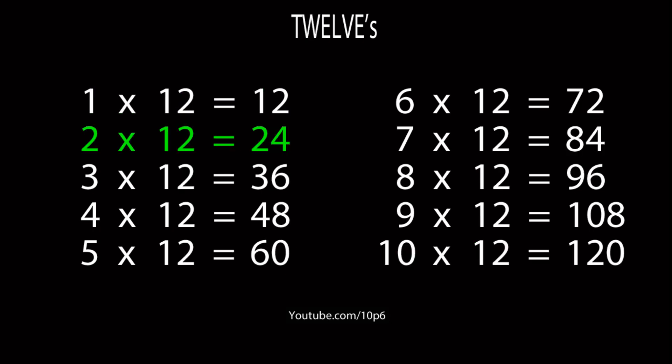1 12 is 12, 2 12s are 24, 3 12s are 36, 4 12s are 48, 5 12s are 60, 6 12s are 72, 7 12s are 84, 8 12s are 96, 9 12s are 108, and 10 12s are 120. Thank you for learning your multiplication tables the easy way.